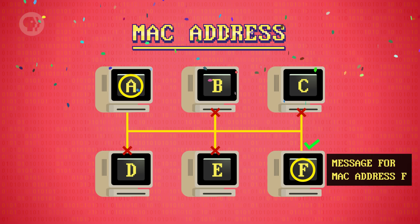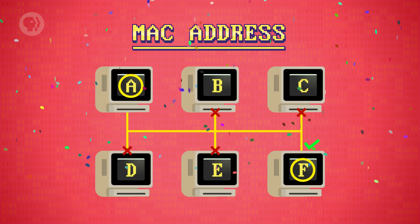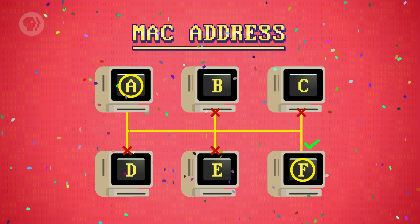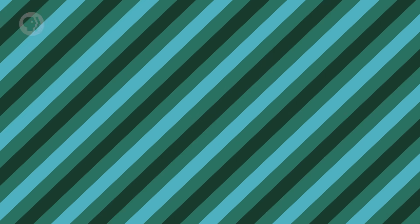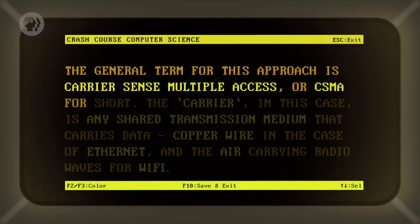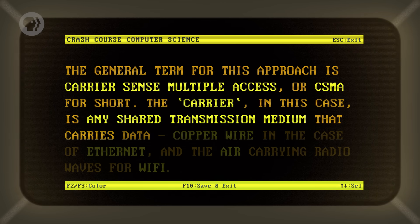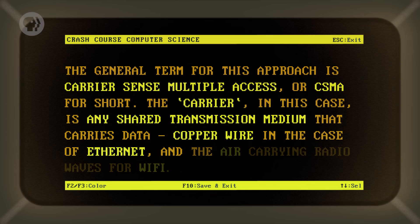This works really well. Every computer made today comes with its own unique MAC address, for both Ethernet and Wi-Fi. The general term for this approach is Carrier Sense Multiple Access, or CSMA for short. The carrier in this case is any shared transmission medium that carries data — copper wire in the case of Ethernet, and the air carrying radio waves for Wi-Fi. Many computers can simultaneously sense the carrier, hence the sense and multiple access. And the rate at which the carrier can transmit data is called its bandwidth.